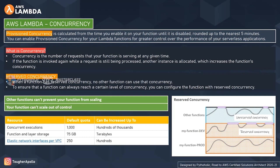If a single user makes a call to the Lambda function, it is considered a single request or single execution. The number of requests your function is serving at any given time is what we call concurrency. You can also have parallel requests running on AWS Lambda, which will incur more memory requirements and initialization of multiple resources.